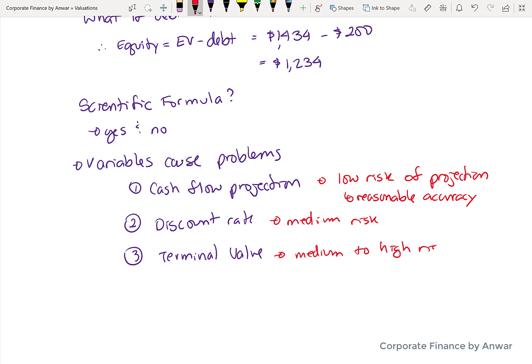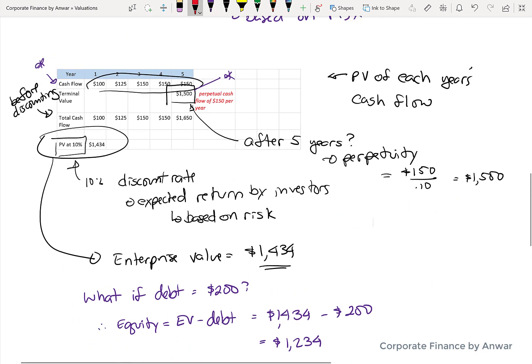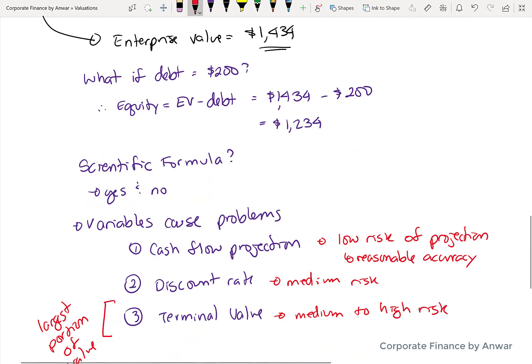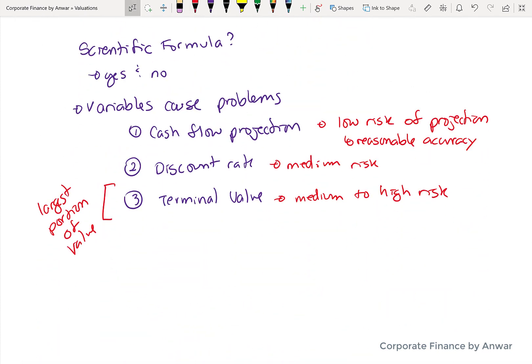Terminal value can be medium to high risk. The problem with terminal value is it's several years down the road, usually five years. And you never know when the business is going to end and how long its life will be. And the other thing is it's the largest portion of the value. If you look at the cash flows every year, $1,500 of it is from terminal value. And you just compare that to the actual cash flows that are generated over the five years, $1,500 is by far the biggest portion of all of it.